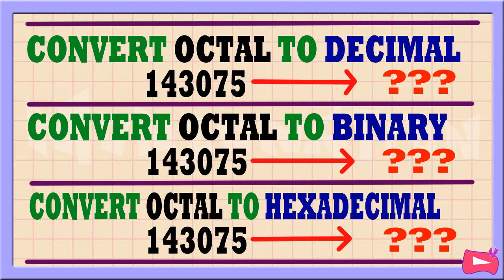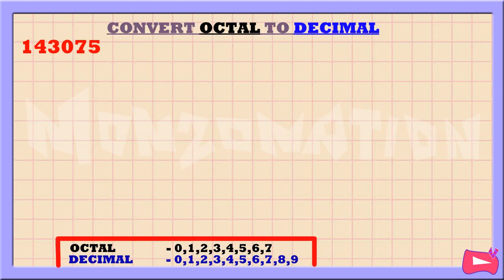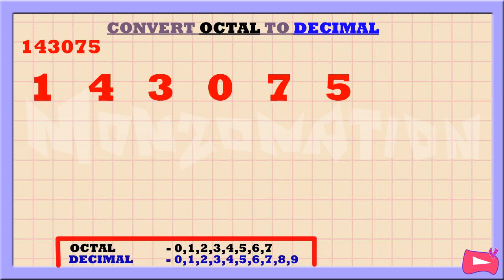This video explains how to convert from octal to decimal, octal to binary, and octal to hexadecimal. Let's convert the octal number 143075 to decimal.